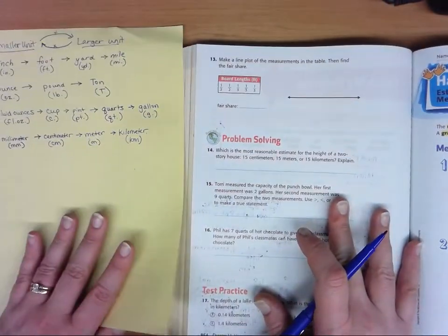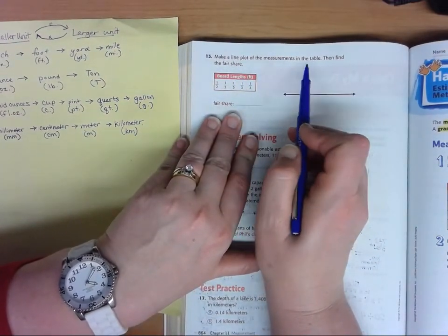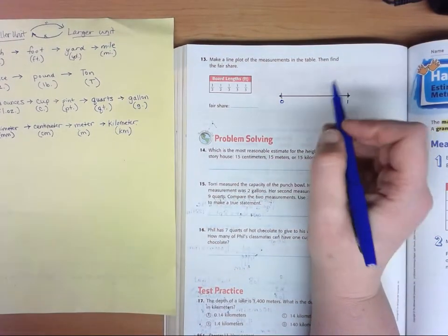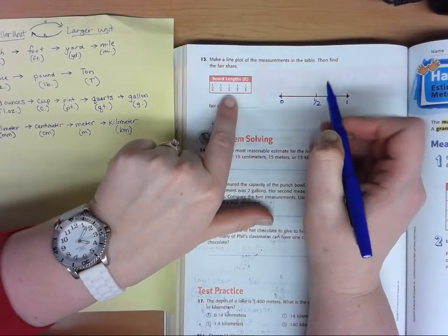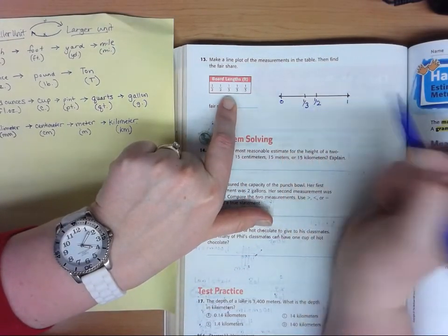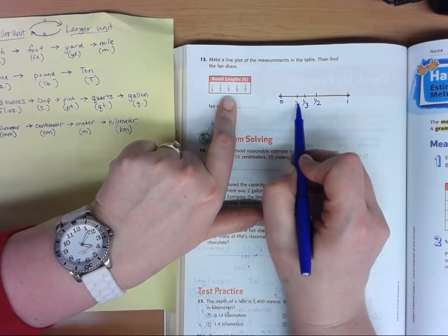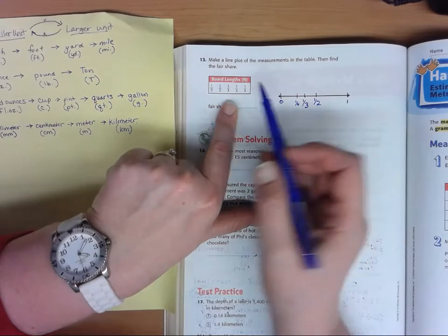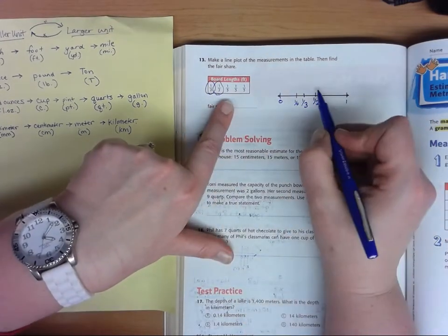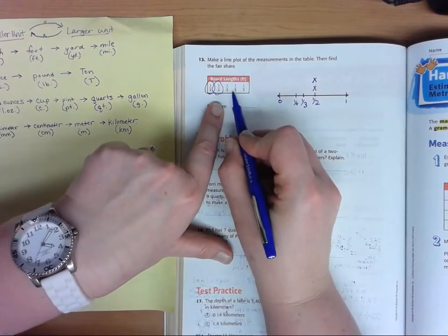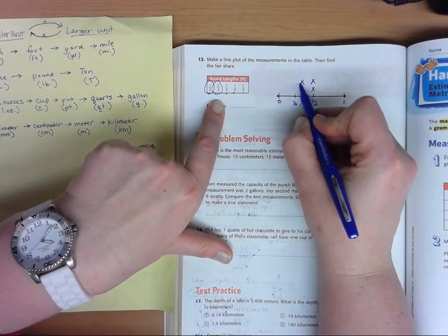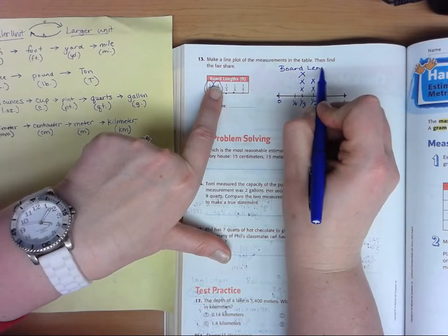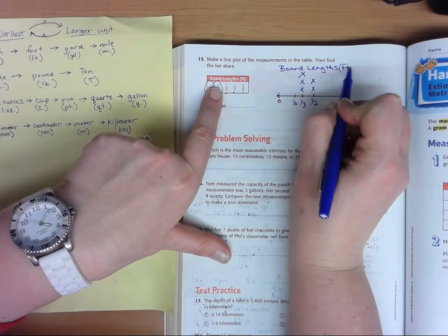If you recall, we also worked on line plots. So it says make a line plot of the measurements in the table, then find the fair share. Let's make our zero to one on our line plot. Our halfway point is one half. And we know that one third is less than the halfway point. One fourth would be in the middle there between zero and one half. One third is a little bit more. If I put X's on my line plot for the amount of data, I have one half and another half. And then I have one third and another and another. So I have three above the one one third. Put a title, board lengths, and this is in feet.